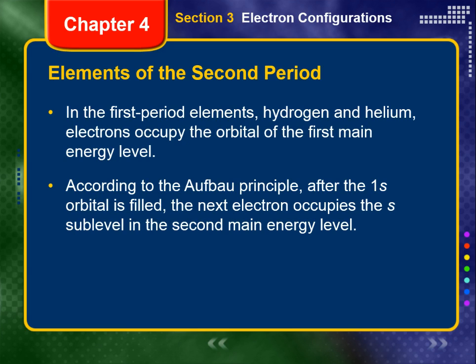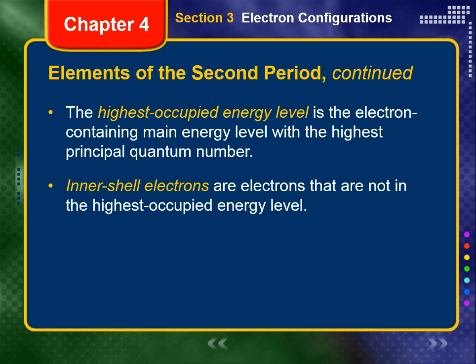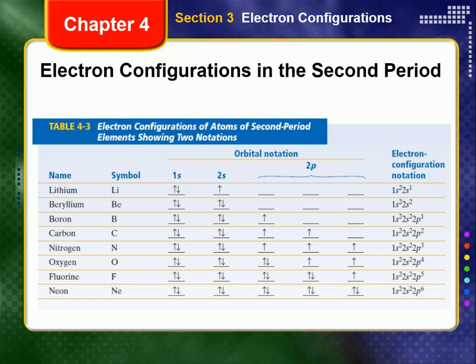In the first period elements, hydrogen and helium, electrons occupy the first main energy level. The ground state electrons in Table 4-3 on page 110, which I'm also showing on the screen here, illustrate how the Aufbau principle, the Pauli exclusion principle, and Hund's rule are applied to atoms of elements in the second period.